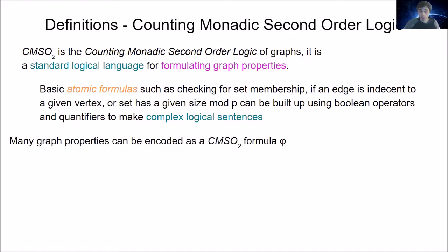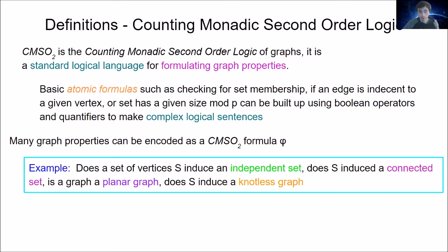Many graph properties can be encoded as a CMSO₂ formula φ. For example, given a subset S of vertices of a graph G, we can ask: does S induce an independent set? Does S induce a connected subgraph? Is G a planar graph? Does S induce a knotless graph? The last two conditions are based on the fact that planar graphs and knotless graphs have finite forbidden minor characterizations.